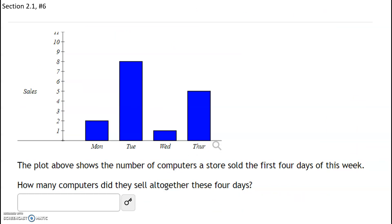The plot above shows the number of computers a store sold in the first four days of this week. How many computers did they sell all together? So they sold two computers on Monday, eight on Tuesday, one on Wednesday, and five on Thursday.